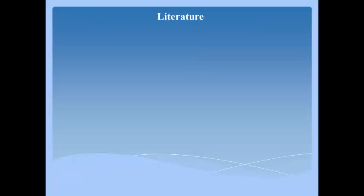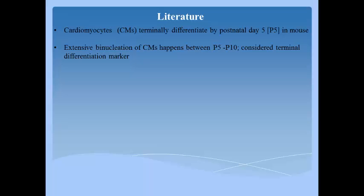Let's see what is known about cardiomyocyte differentiation. Cardiomyocytes terminally differentiate by postnatal day 5 in mouse. Extensive binucleation of cardiomyocytes happens between P5 and P10, considered a terminal differentiation marker. By P7, the heart shows reduced regenerative capability.